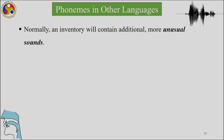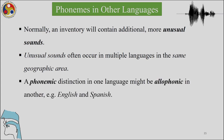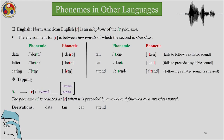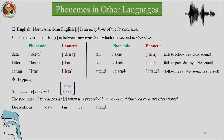Normally an inventory will contain additional, more unusual sounds. Unusual sounds often occur in multiple languages in the same geographic area. A phonemic distinction in one language might be allophonic in another. We have an example from English and Spanish with regard to the tap sound.